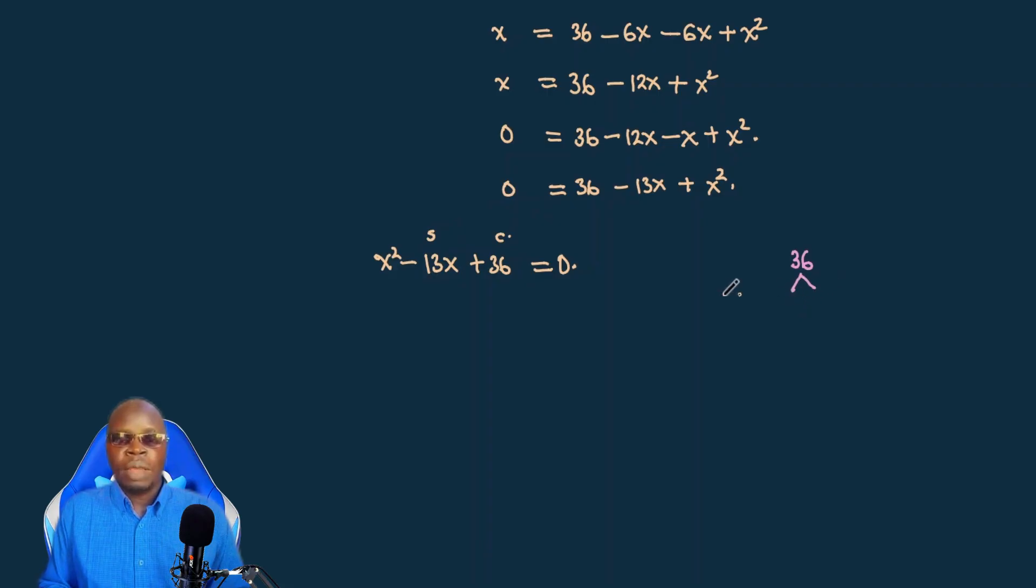One, when you add them you should get exactly this coefficient negative 13, and if you multiply you should get exactly 36. What are those two factors of 36? So we realize that we have here 4 and 9. Now these 4 and 9 work in a way that if you multiply 4 by 9 you get 36, and that is positive. But if you add 4 and 9 you get 13, which is positive not negative. And based on this experiment we had here...